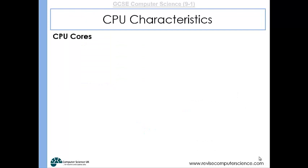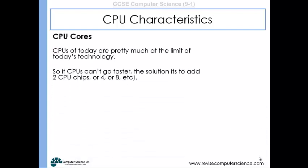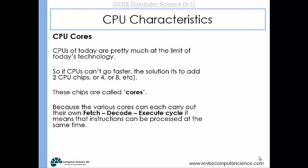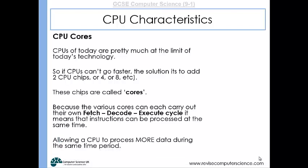Another characteristic is the number of cores that a CPU has. A core is basically a processing unit, and CPUs can have more than one — they could be dual core, quad core with four, or even have eight cores. This means a CPU can fetch, decode and execute two, four or eight instructions all at the same time, so more data can be processed in the same time period.